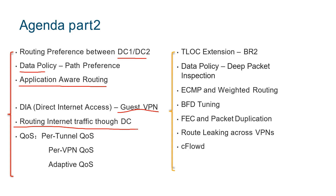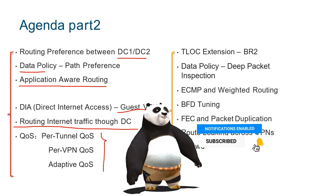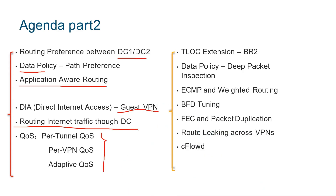Next, let's look at QoS scheduling. Our QoS, compared to before, has added three new different QoS types. Each tunnel can implement QoS, and each VPN service can also implement QoS. Considering bandwidth for headquarters and branches, we can implement dynamic QoS.